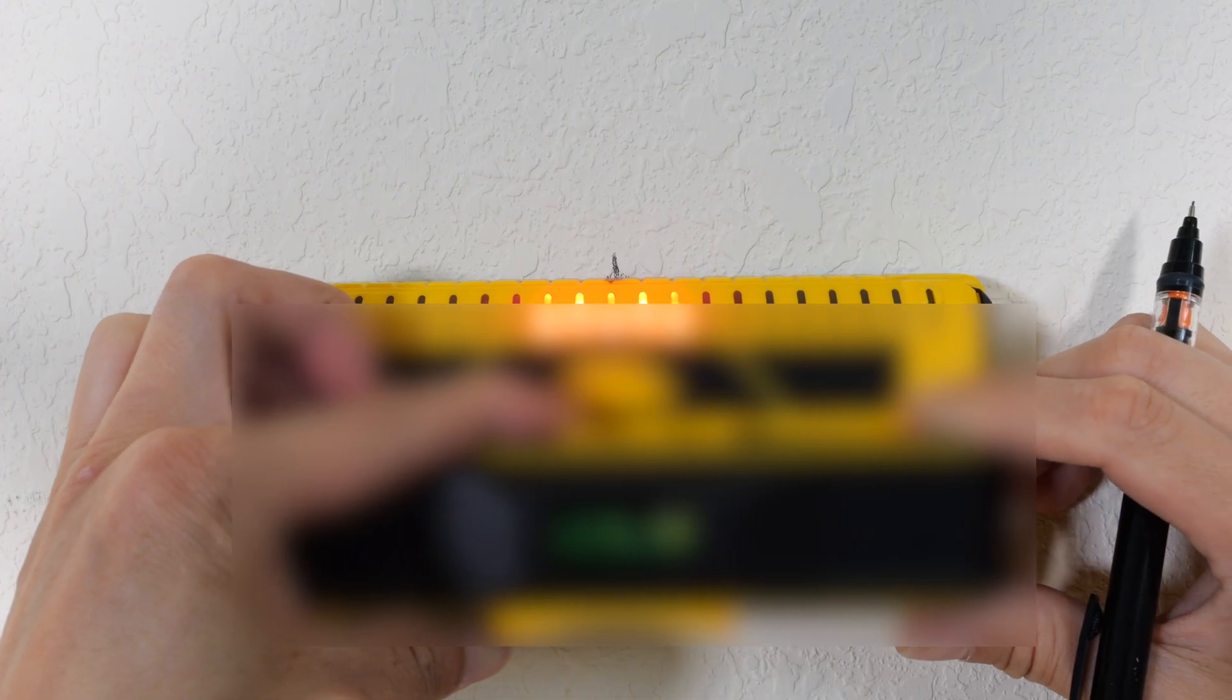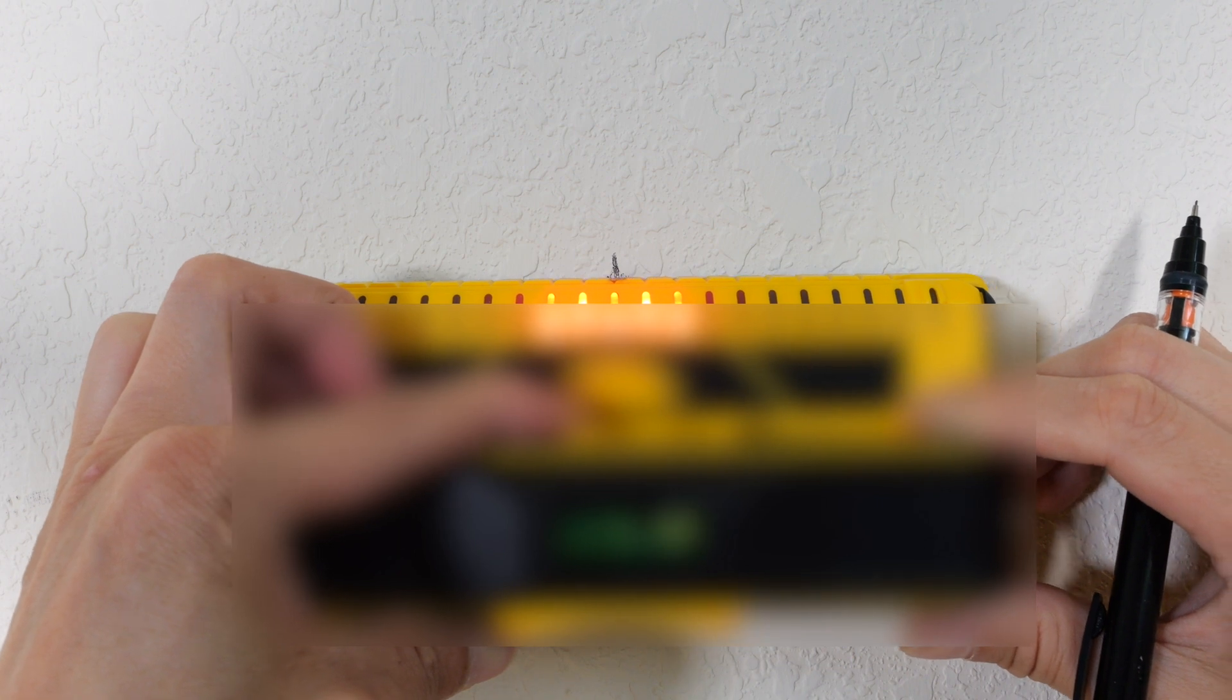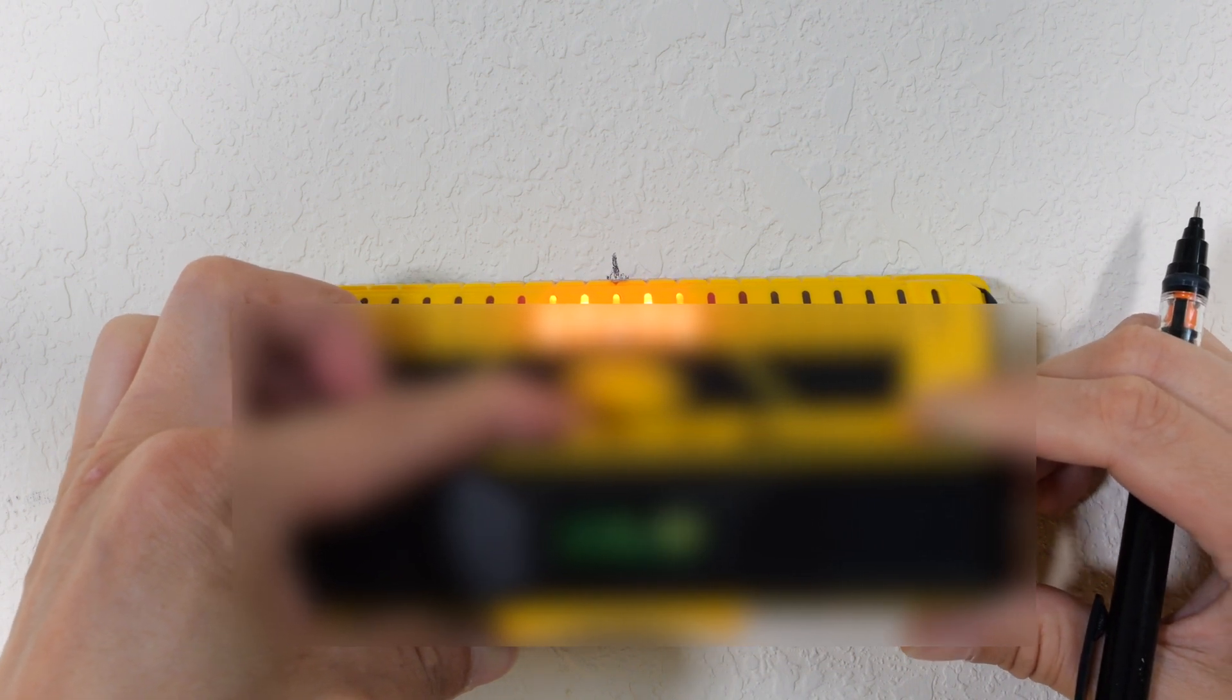I have a typical stud finder here. If I move it left to right, it shows that the stud could be anywhere between there. This distance is about 5 sixteenths of an inch wide. That's your potential error, and you don't know where exactly is the center of the stud there.